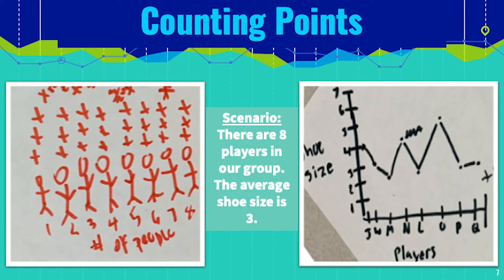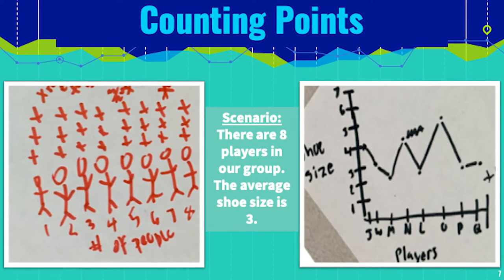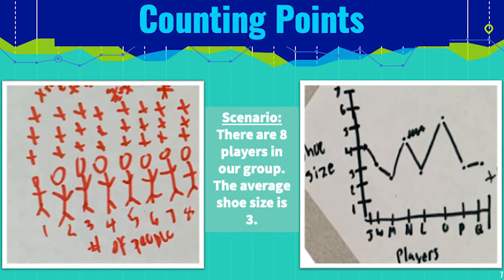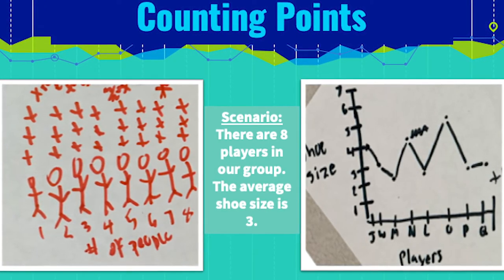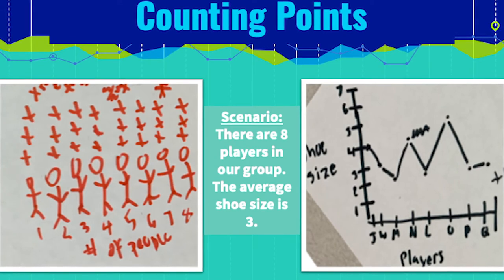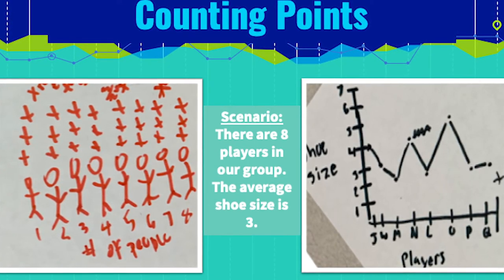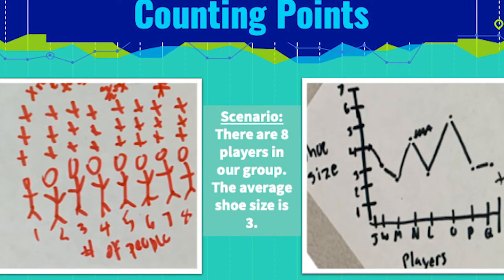For example, these two pictures show different representations for the scenario provided. One team shows each player having the same shoe size of three, while the other representation shows each player having different shoe sizes. Each of these teams would earn one point for their unique representations.